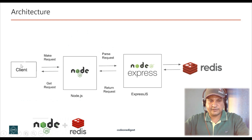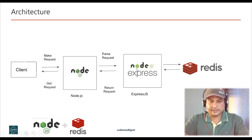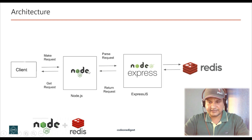Let me explain the project with a simple architecture diagram. We have a Node server running the Express module, giving us GET API and POST API capabilities. The client interacts through the API with our Node server, and the Node server connects to our Redis cache. We store, push, and retrieve data from Redis cache. Always remember — Redis stores data in the form of key and value; it's a key-value storage.